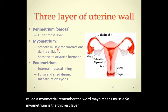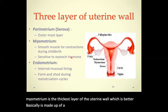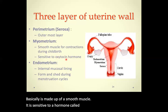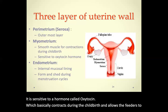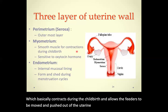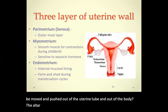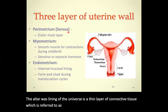The second layer, shown in light pink, is called the myometrium — 'myo' means muscle. The myometrium is the thickest layer of the uterine wall, made up of smooth muscle. It is sensitive to the hormone oxytocin, which causes it to contract during childbirth, pushing the fetus out of the uterus. The outermost lining is a thin layer of connective tissue referred to as the perimetrium, or serosa.